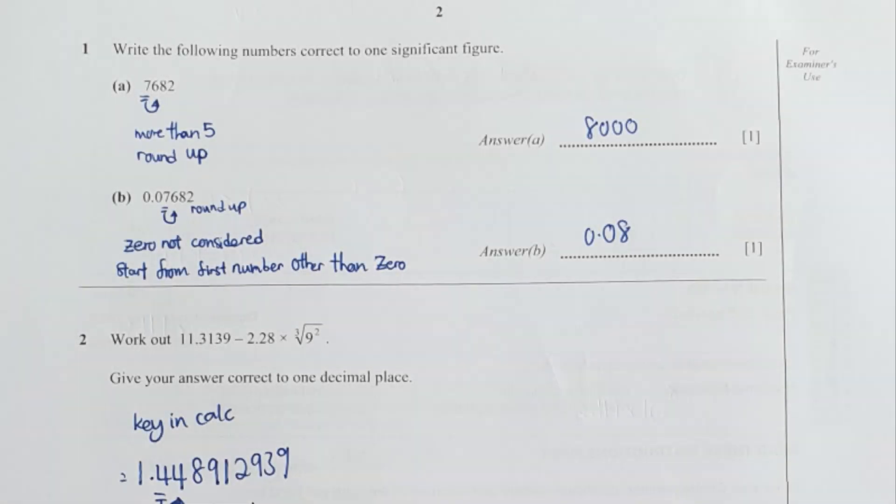For the first question, correct to one significant figure. The first number is seven, so you're required to look at the numbers behind it. Since it is more than five, you're required to round it out as 8,000.